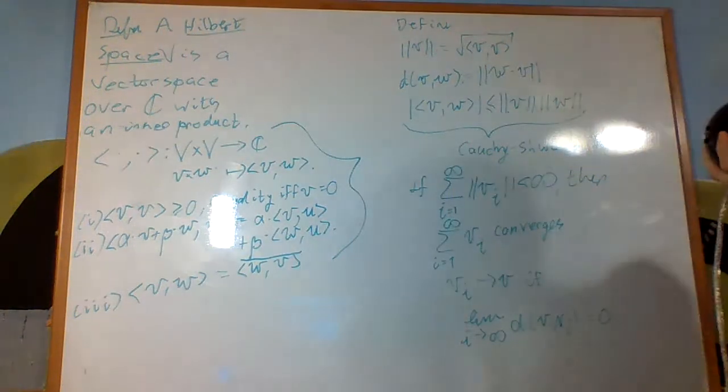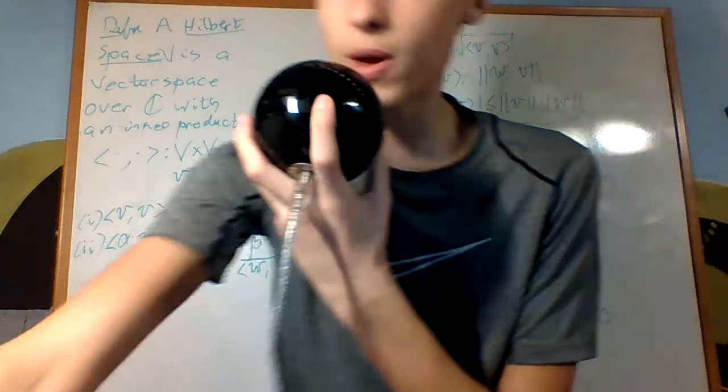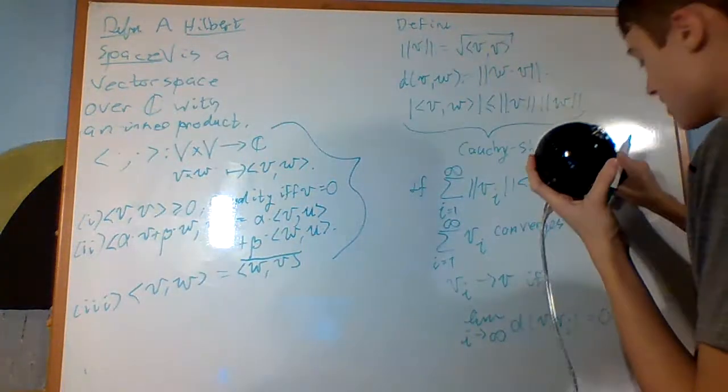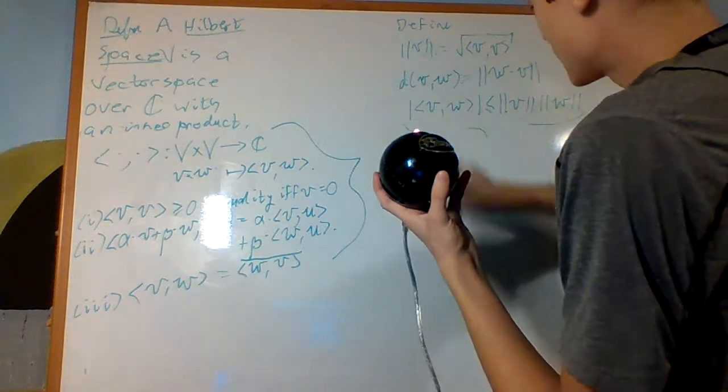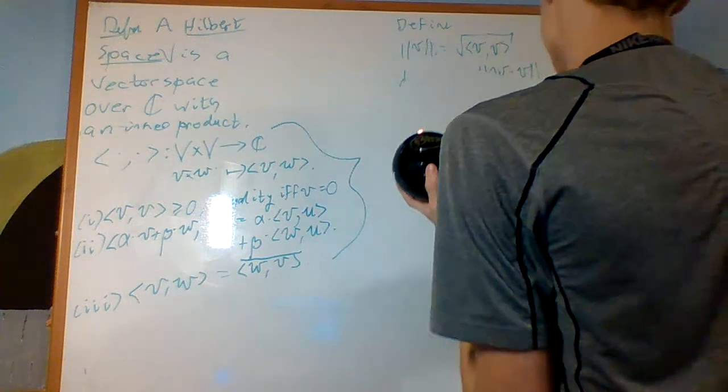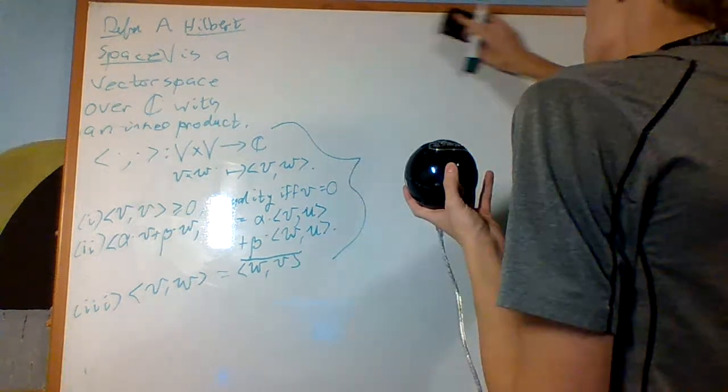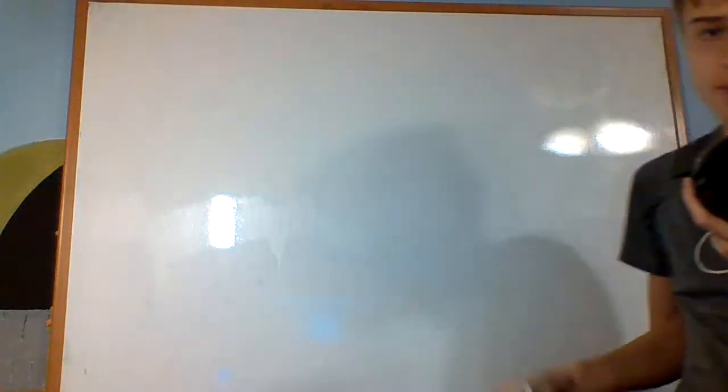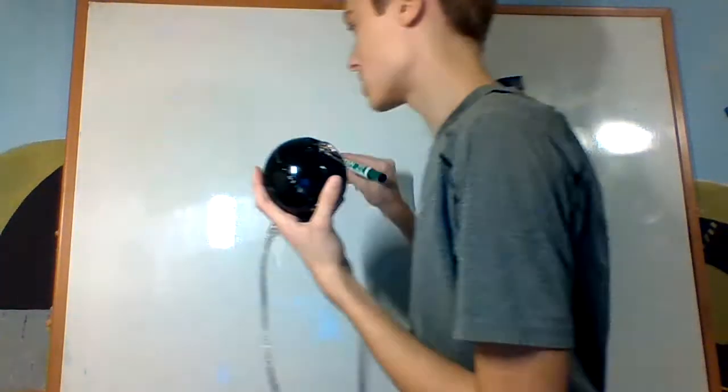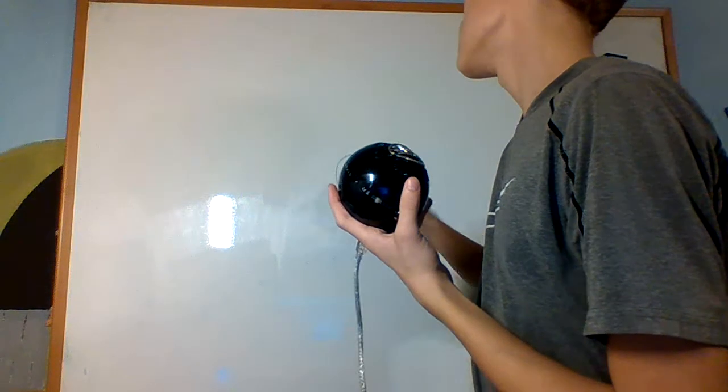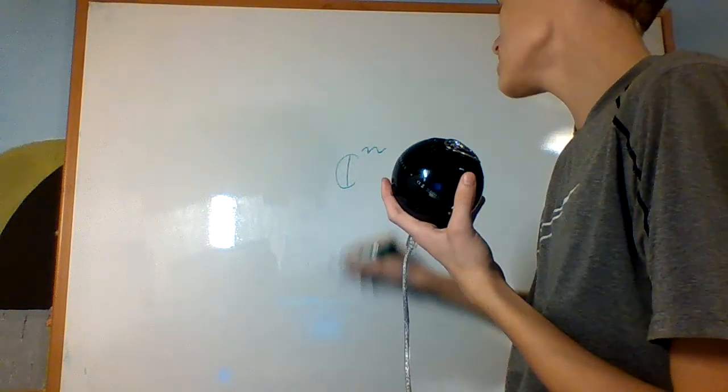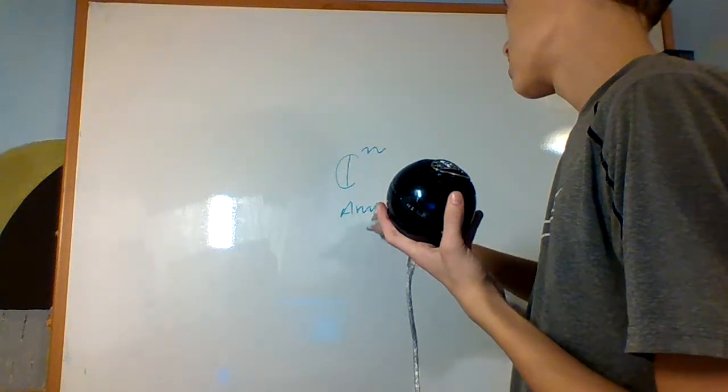And so this is a Hilbert space, and what does this have to do with quantum mechanics in any way? Well what it does is that it allows you to talk about inner products and such over more generalized vector spaces. So instead of it just being C^N it can be any dimension.